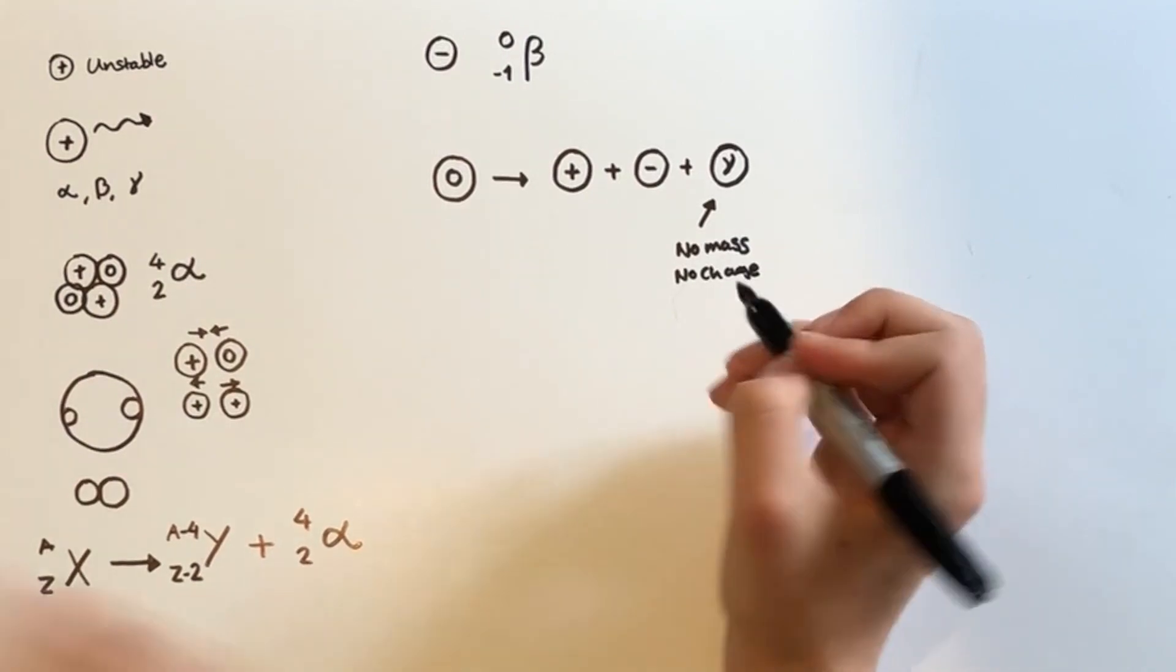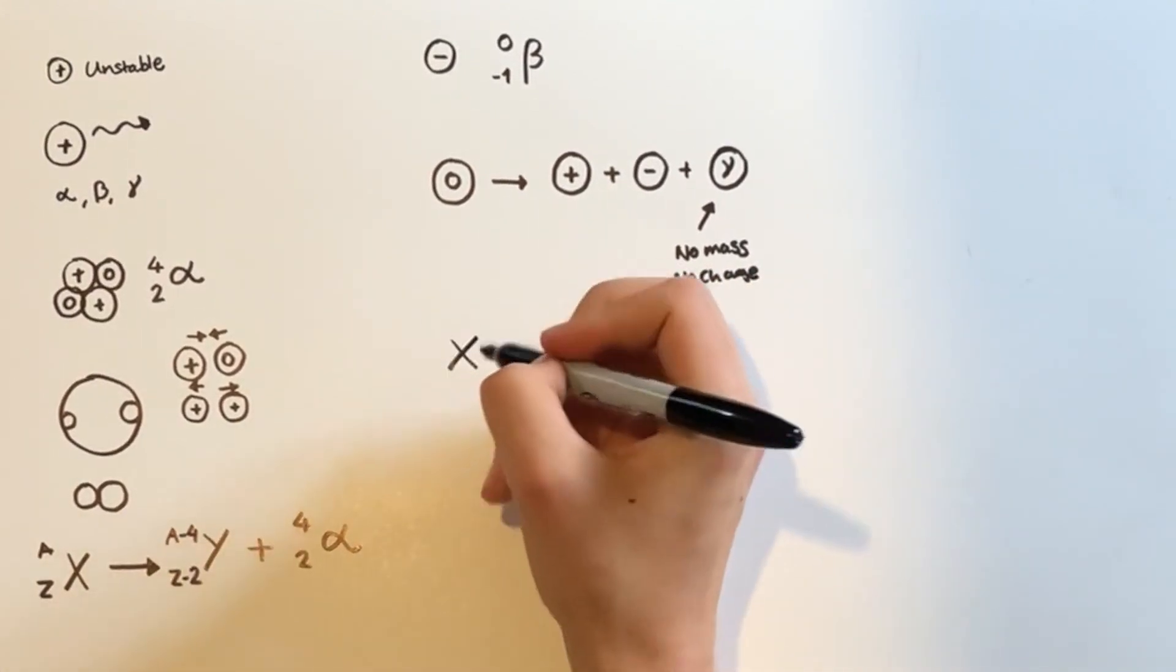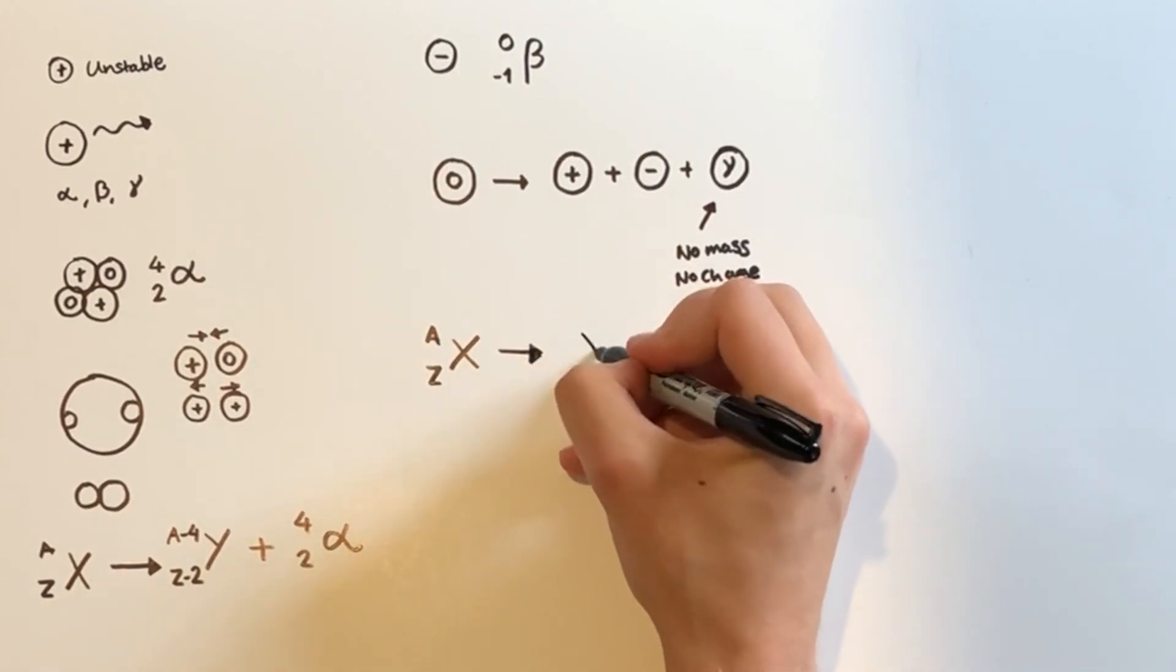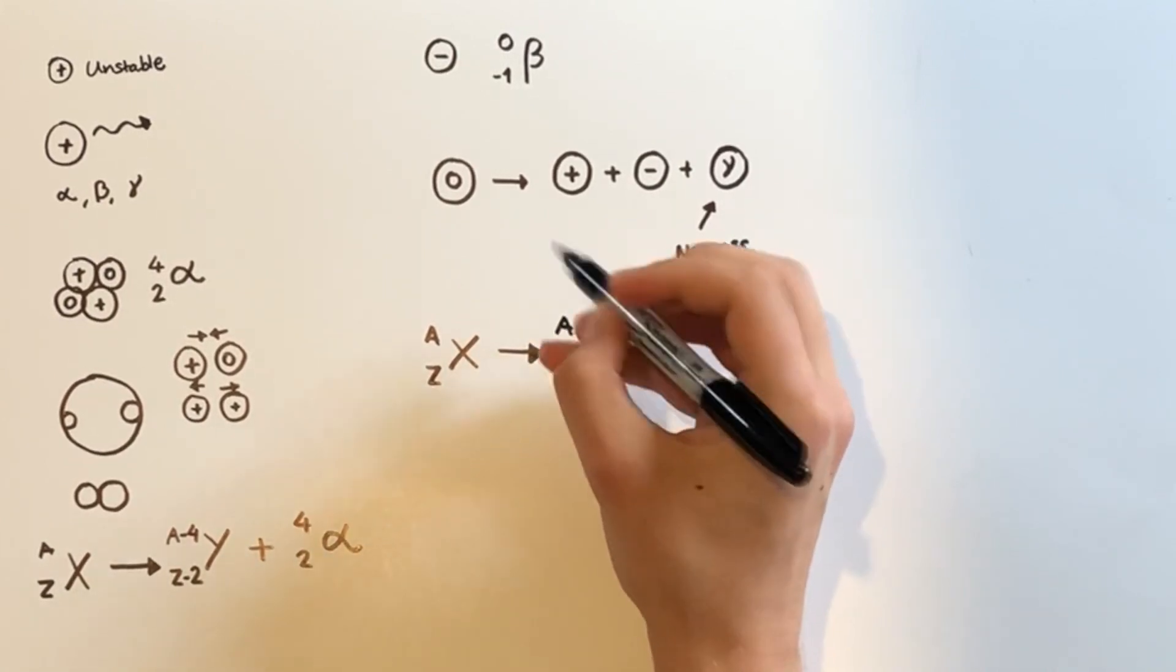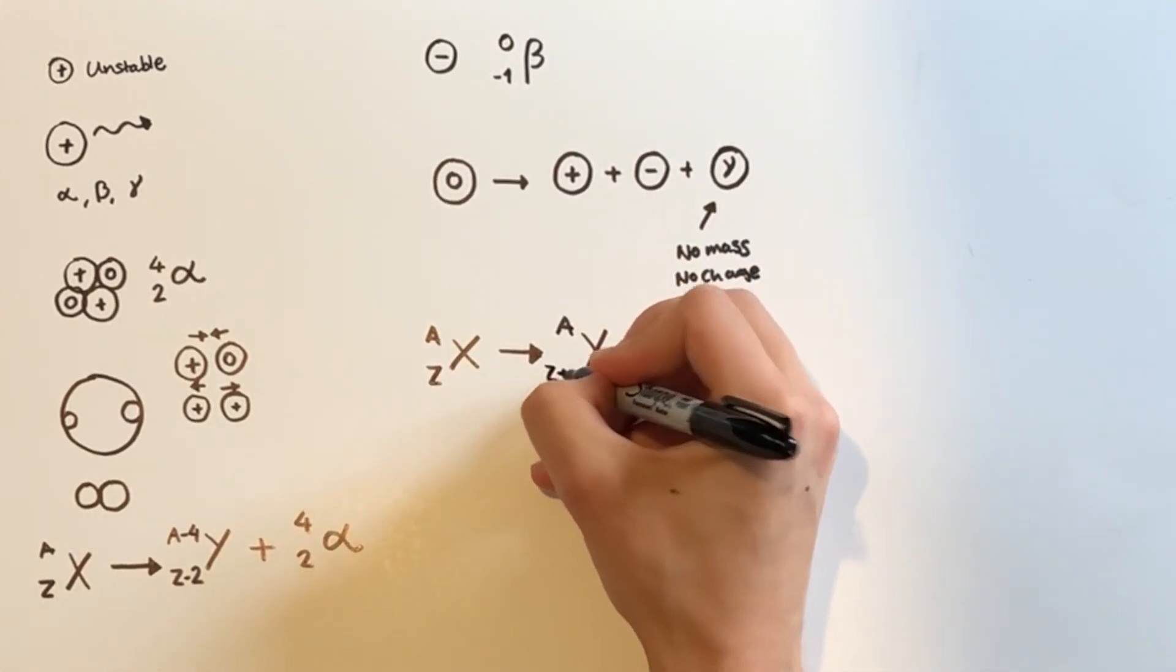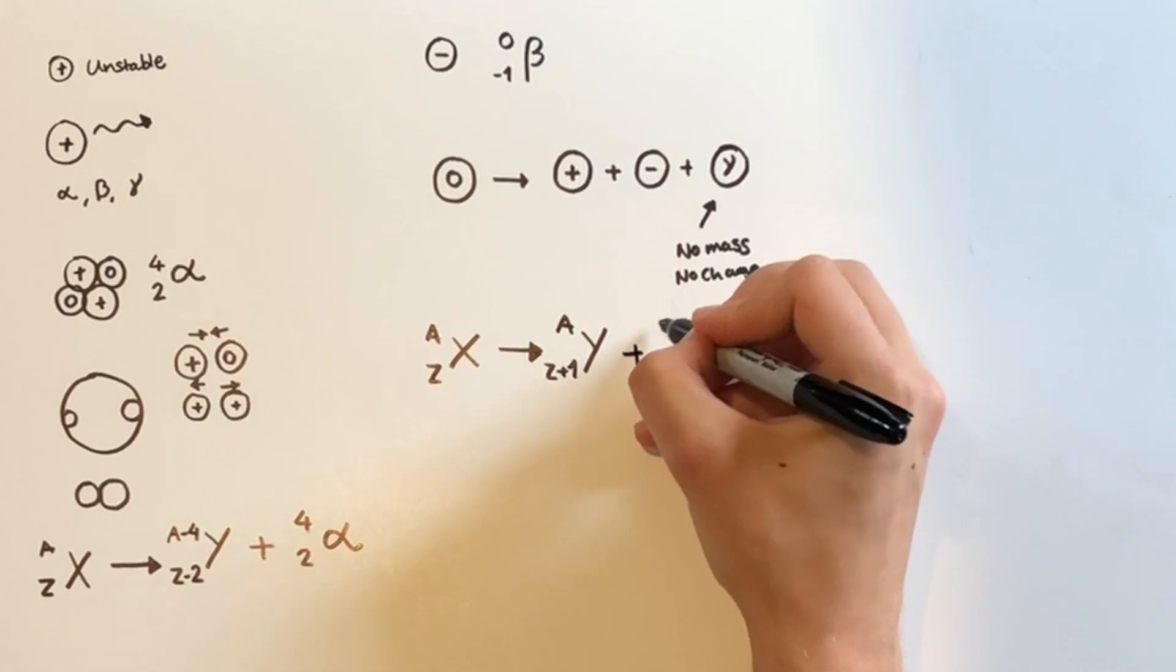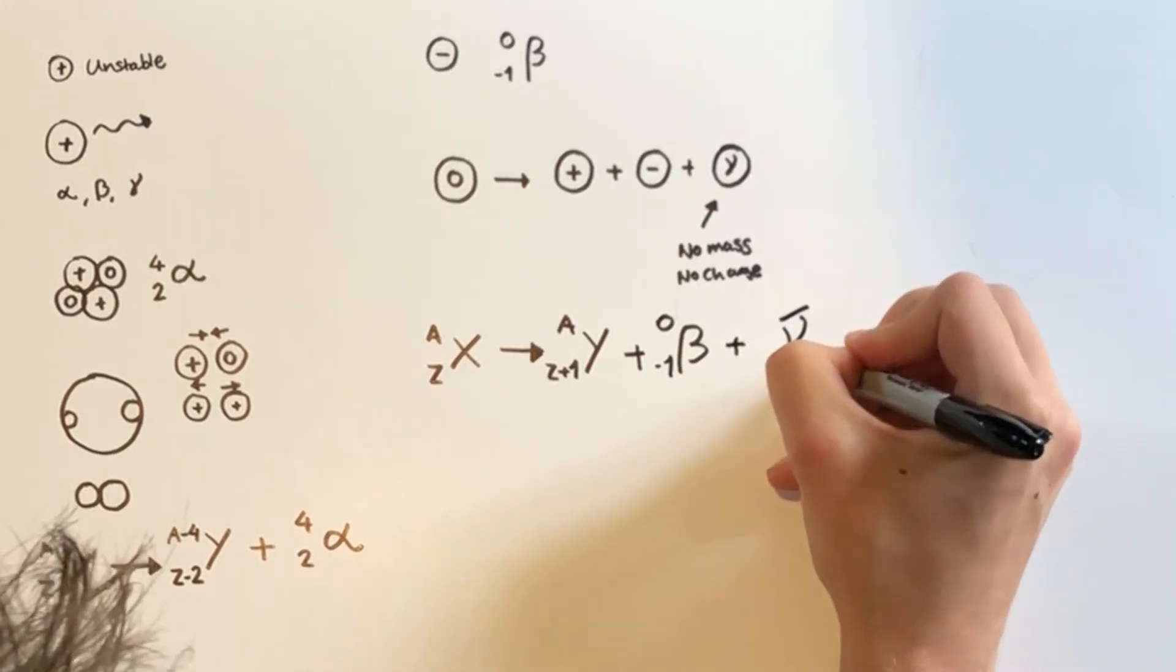But an antineutrino, this guy here, has virtually no mass and no charge, but they are emitted to conserve lepton number. But we'll talk more about the conservation laws in particle interactions in a future video. And we could also write the beta reaction as an equation. So say, like before, we have our original nucleus X, which has a nucleon number of A and a proton number of Z.